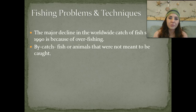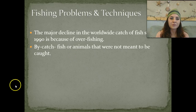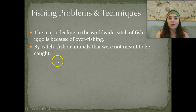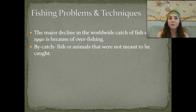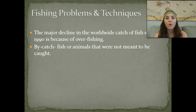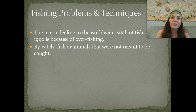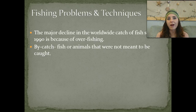We also have fishing problems because we're overfishing our oceans. There has been a major decline in the worldwide catch of fish since the 1990s because of overfishing. We have a lot of bycatch, meaning we're catching different types of organisms—whether other species of fish, marine mammals, sea turtles, or birds that we're not fishing for—that unfortunately get trapped in the nets.